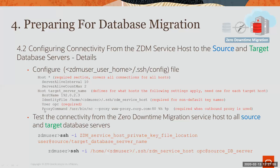If you have a proxy requirement, you will need to include a proxy command specific to your environment. After completing this, test your connectivity. First, use SSH with the -i flag specifying the location of the private key, then OPC or the user, at either the source or target database server name. You can also test using SSH with just the server name, which tests the SSH config file configuration. Test the keys first with -i, then without to validate the SSH config.